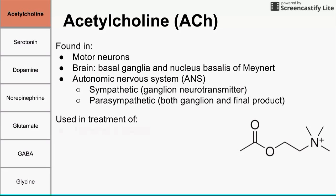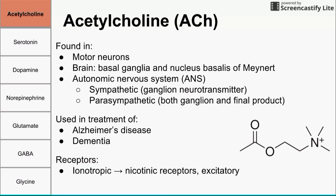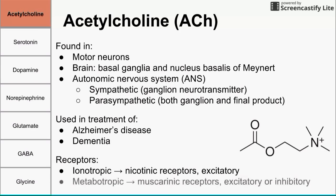Acetylcholine is used to treat Alzheimer's disease and dementia, two diseases associated with memory. The receptors for acetylcholine are nicotinic receptors, which are ionotropic and excitatory, and muscarinic receptors, which are metabotropic and either excitatory or inhibitory. Ionotropic means a receptor activated by a ligand that directly opens a channel — essentially a ligand-gated ion channel. Metabotropic, on the other hand, is an indirect way of activating an ion channel, usually through an enzyme cascade, sometimes with second messengers. The two acetylcholine receptors to know are nicotinic and muscarinic.